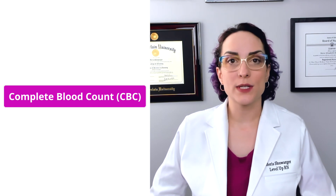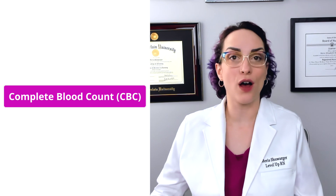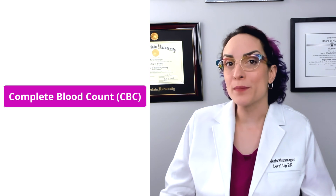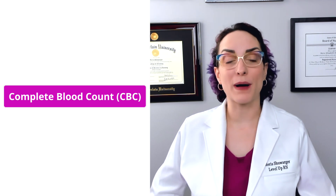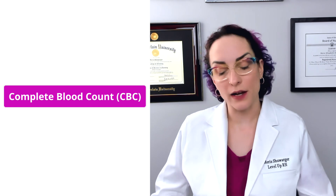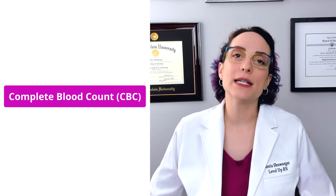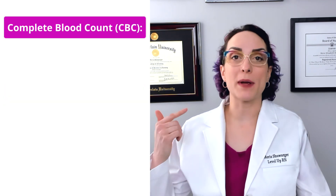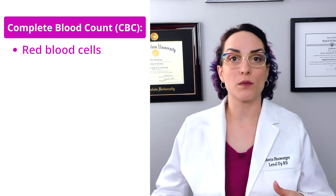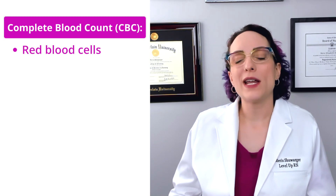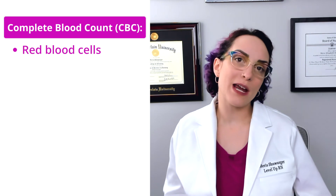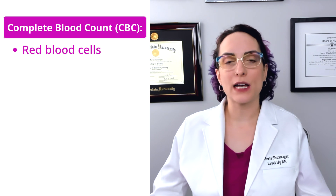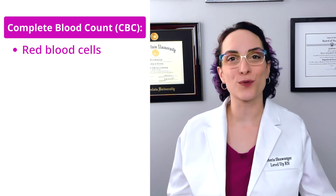A CBC is what it sounds like — it is counting the components of your blood. The way I think of this is it's looking at the formed elements, the things that can be counted by looking under a microscope, which is how this is done when it is done manually. A CBC is going to give me information about what is going on in a couple of different areas. We're going to get information about the red blood cells — how many there are, what size they are, what shape they are, whether they have a nucleus or not.